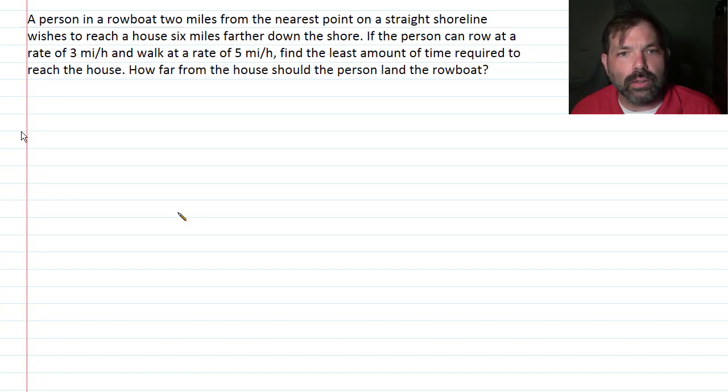A person in a rowboat two miles from the nearest point on a straight shoreline wishes to reach a house six miles farther down the shore. If the person can row at a rate of three miles per hour and walk at a rate of five miles per hour, find the least amount of time required to reach the house. How far from the house should the person land the rowboat?